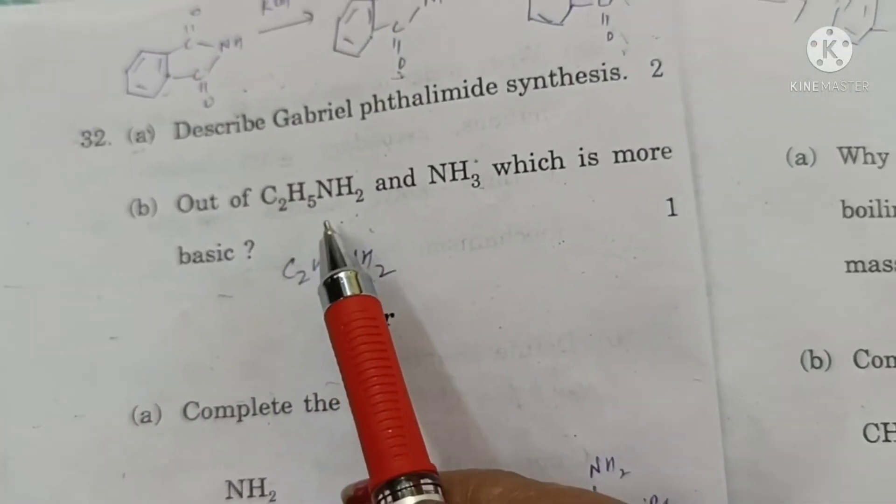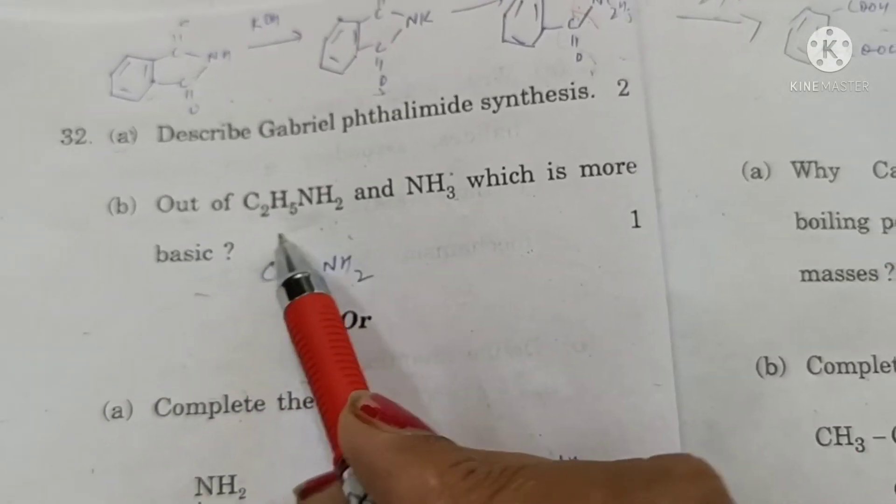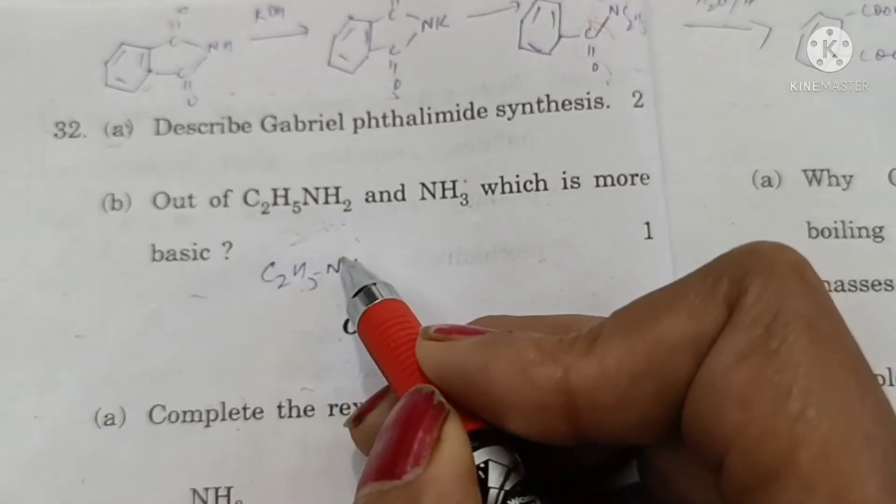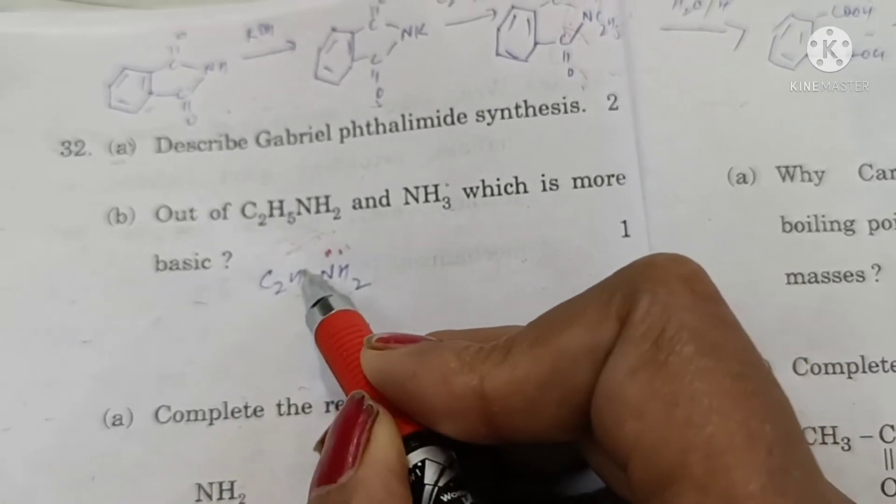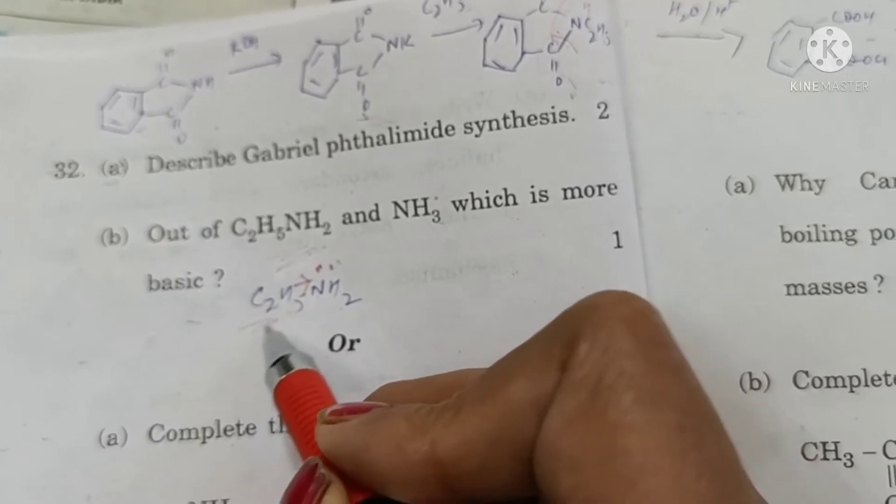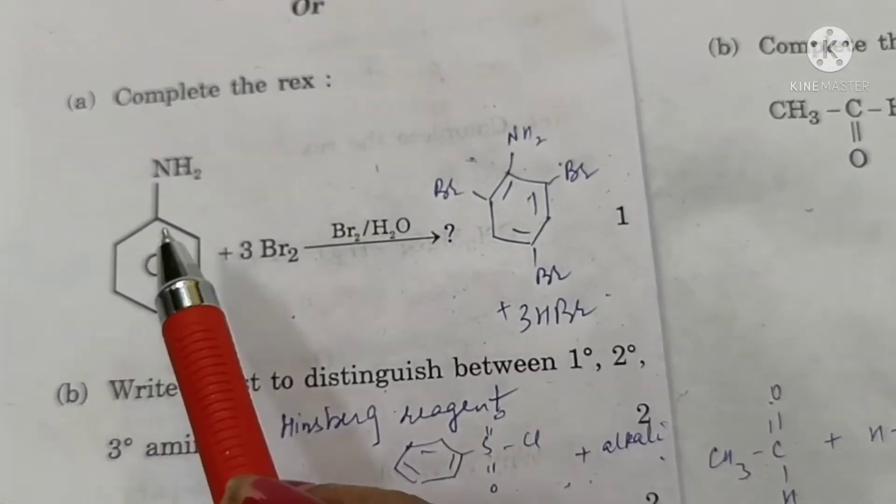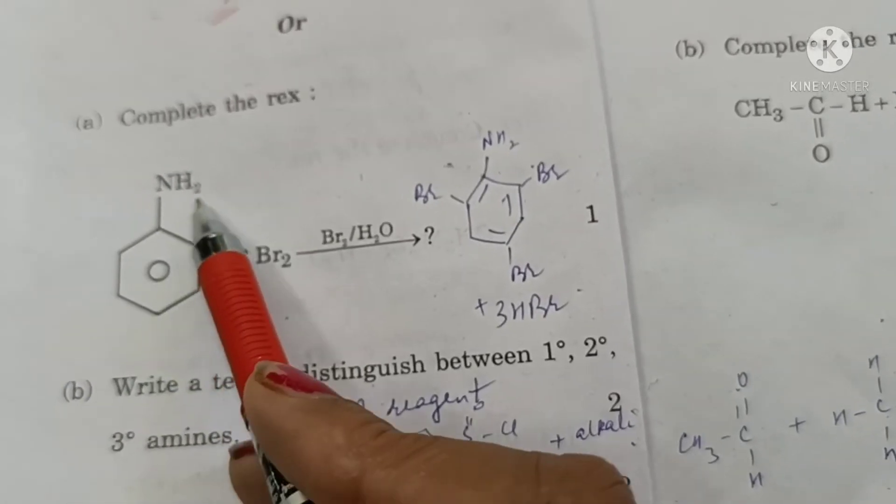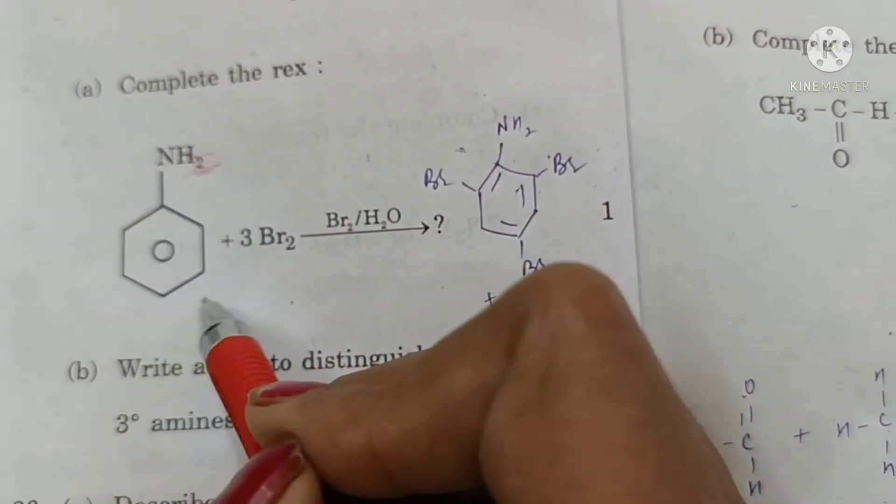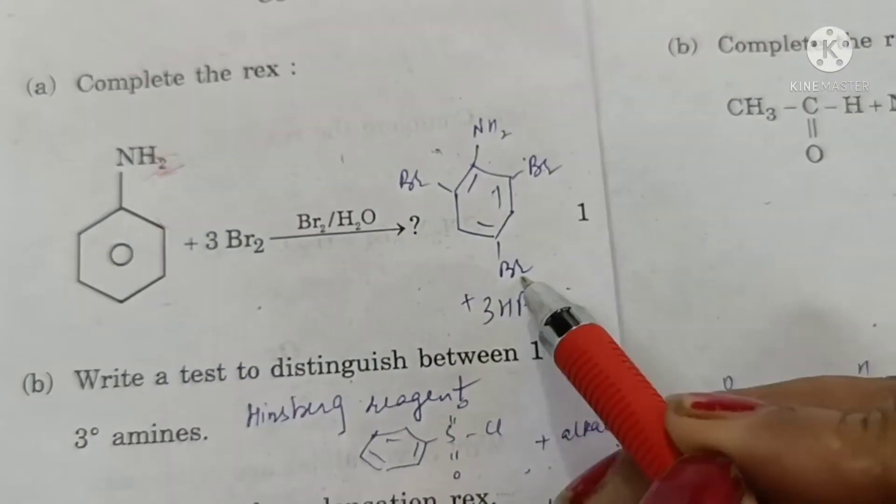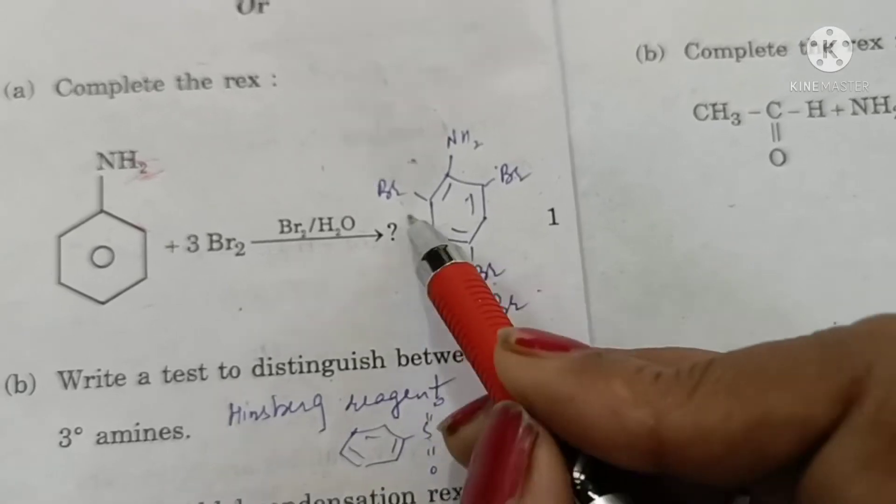Out of C2H5NH2 and NH3 which is more basic? This is more basic because availability of lone pair of electrons on nitrogen is increased further by the presence of an electron releasing alkyl group. Complete the reaction aniline plus bromine. This is an activating group so it activates benzene ring and so bromination occurs at two, four and six position to form 2,4,6 tribromoaniline.